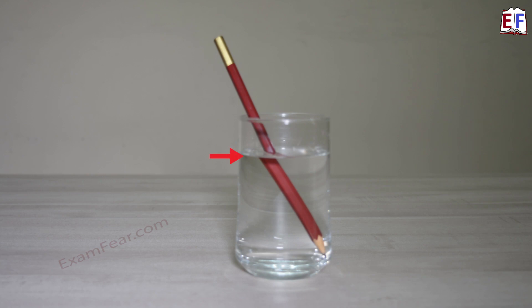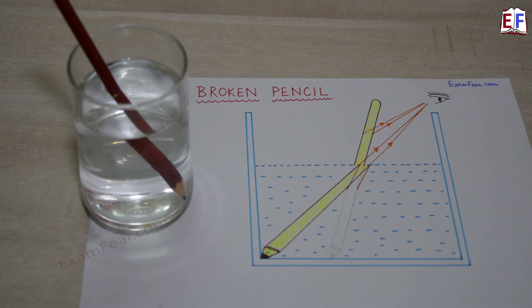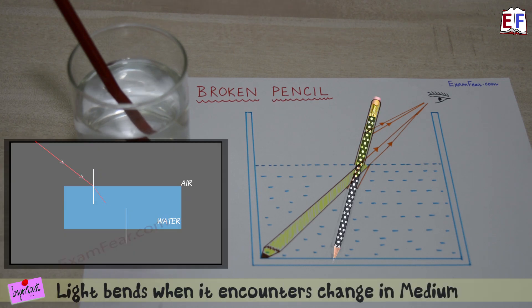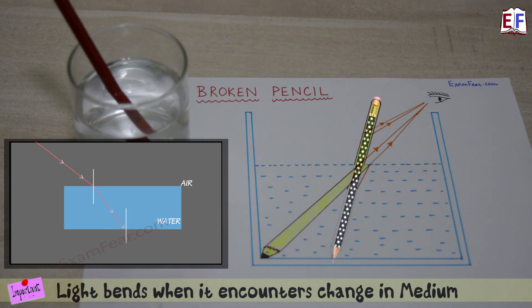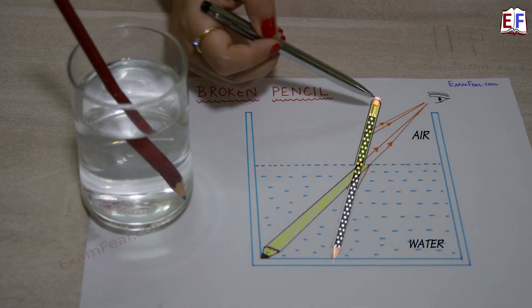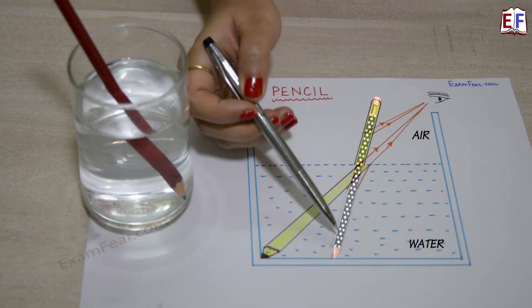The science behind this broken pencil is based on one simple fact: whenever light encounters a change in medium, it bends. So here, what exactly is happening — let's say this is how the pencil is inside water.